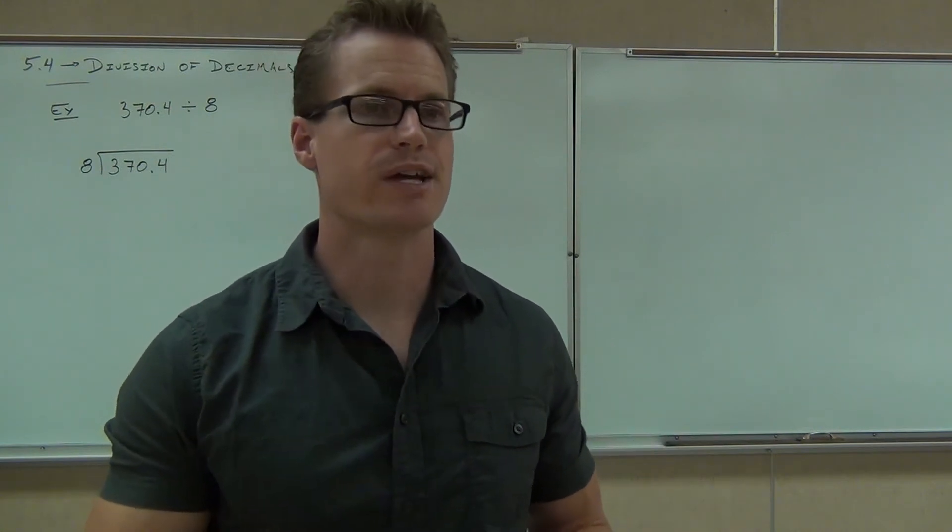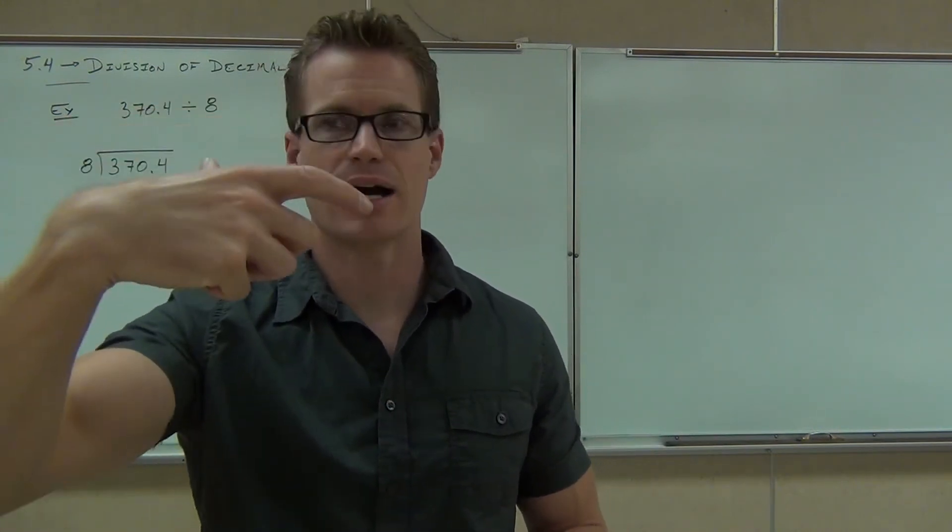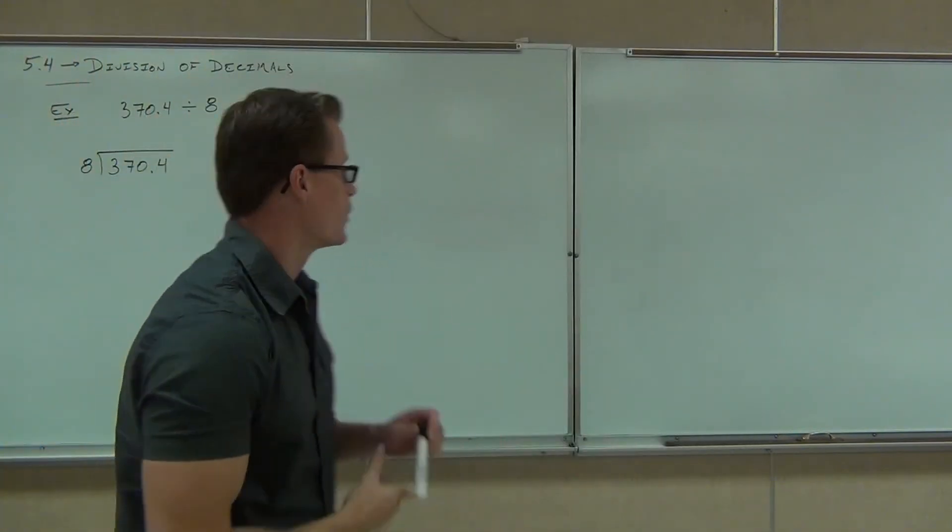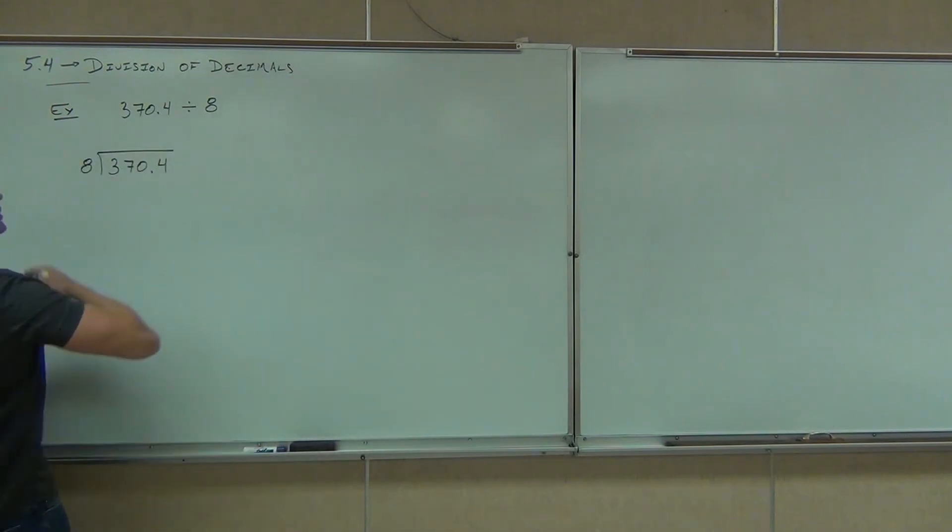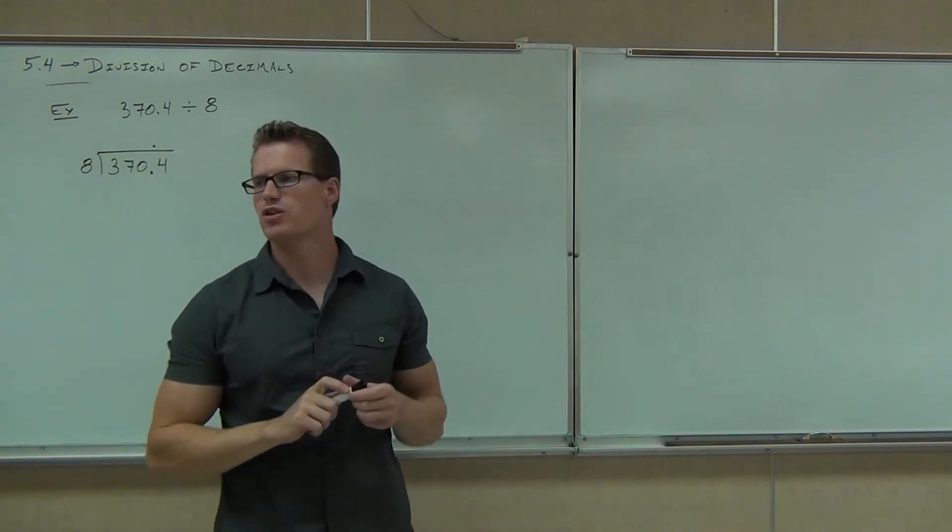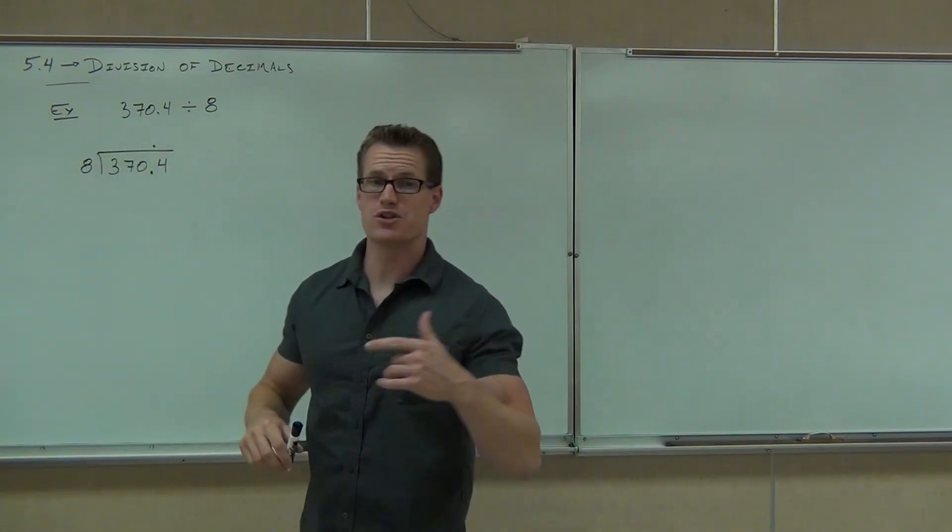We can do division exactly the same way with decimals as we did with whole numbers. The only thing you have to remember is that if you have a decimal in your number inside of our division symbol, that also needs to be translated to the top of our problem or the quotient. So if we have a decimal here, the first thing we're going to do is move that right up there. Then we'll do our division just like normal.